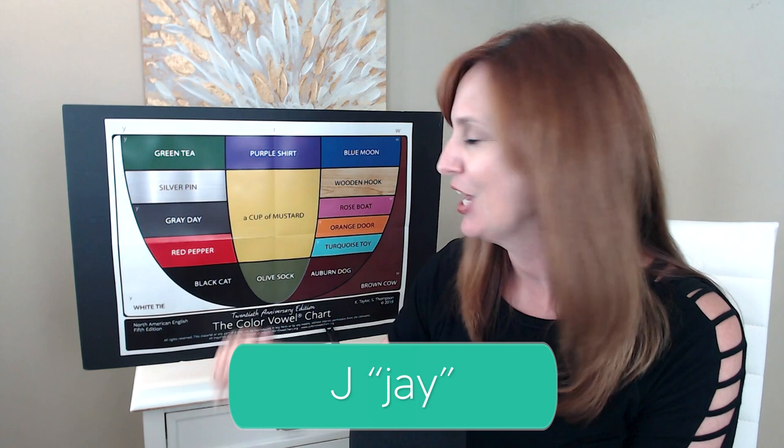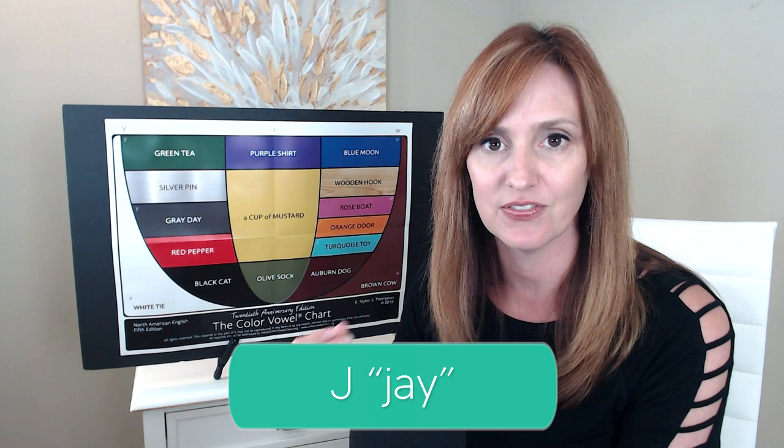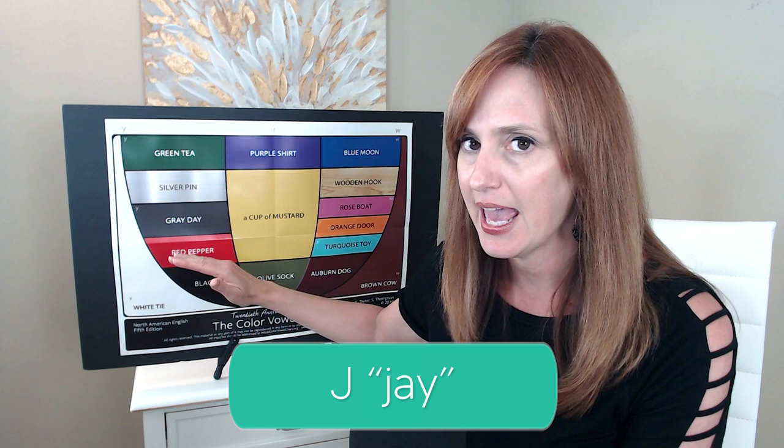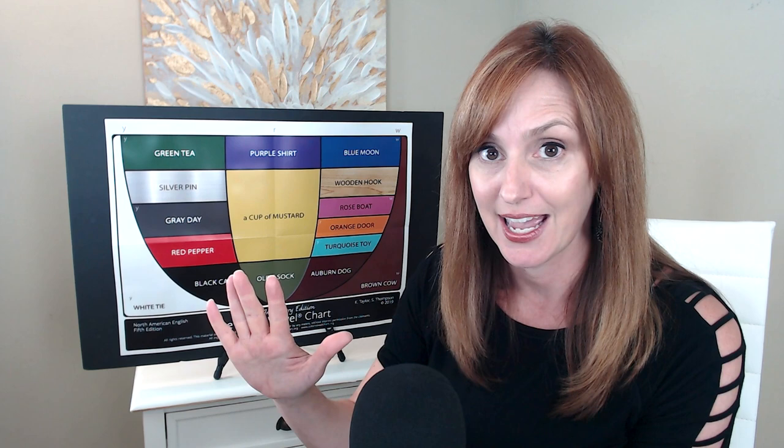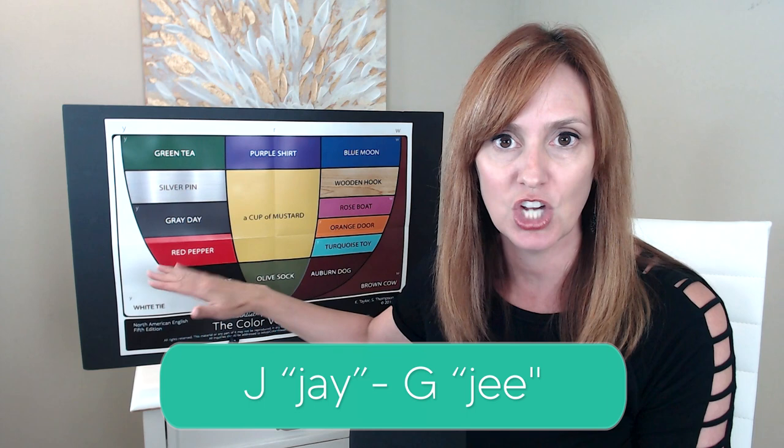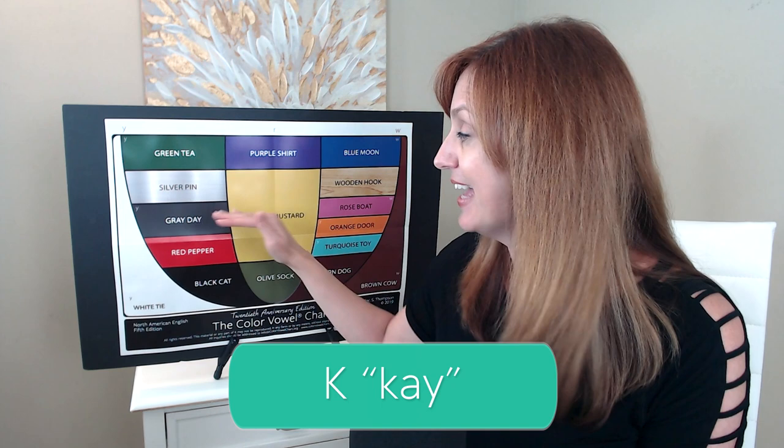J. Gray day J. Here we have that soft G sound — J — but instead of the E, we're going into the A. J. Gray day J. Do you hear the difference between J and G? Interesting, right? K. Gray day K. Here we begin with the K consonant — back of the tongue coming up towards the roof of the mouth — then releasing into that gray day vowel. K.